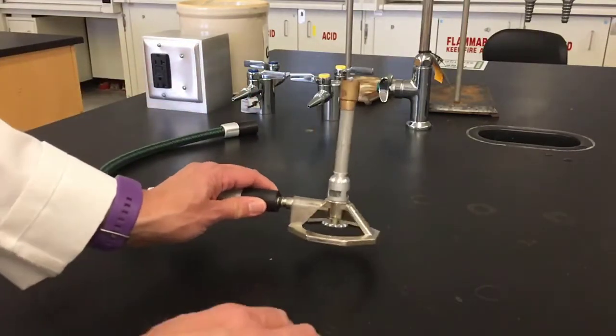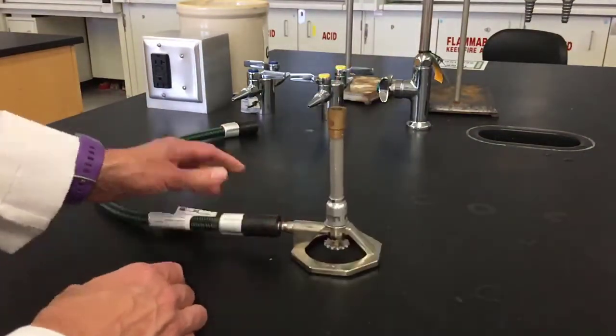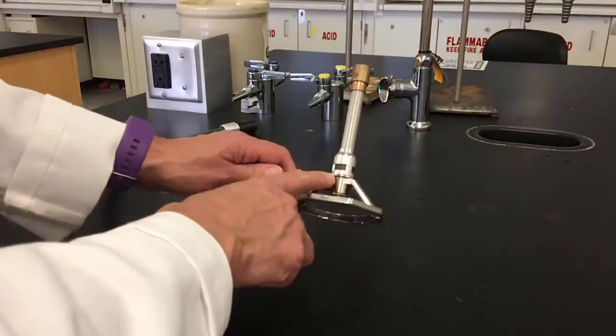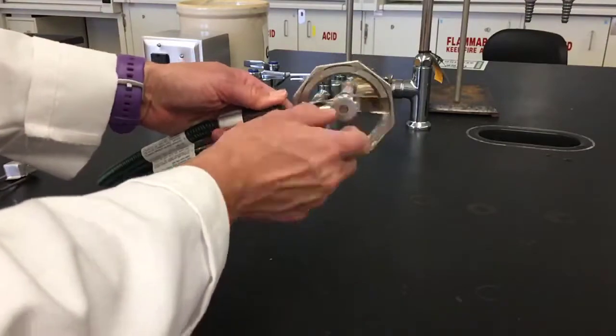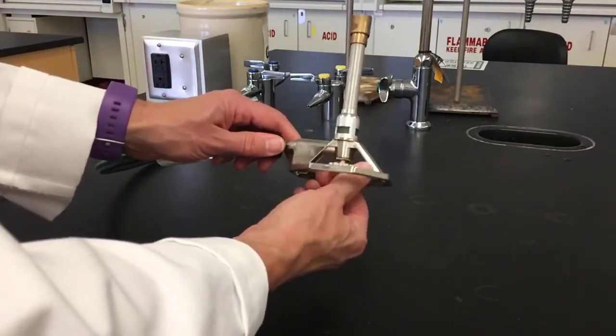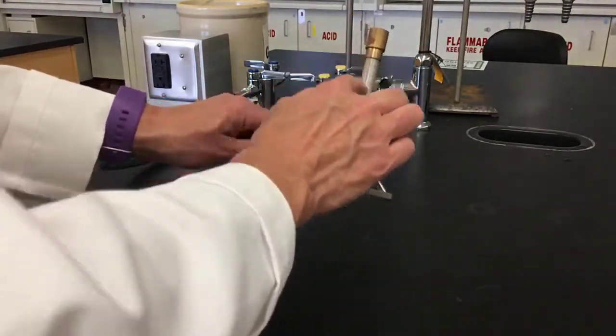We're going to talk about the various parts of the Bunsen burner. You've got the hose where the gas comes in. You also have the needle valve which controls the amount of gas going into the Bunsen burner.